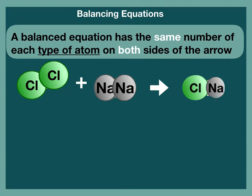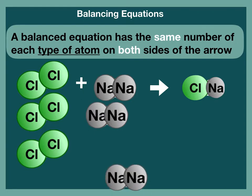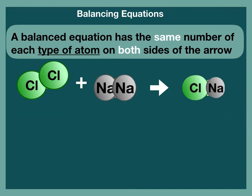A balanced equation has the same number of each type of atom on both sides of the arrow. To balance it, we can change the number of different molecules until we find a combination that gives us the same number of each type of atom on both sides. We might need more of each of the compounds or only more of one of the compounds. Can you figure out what this one would need?